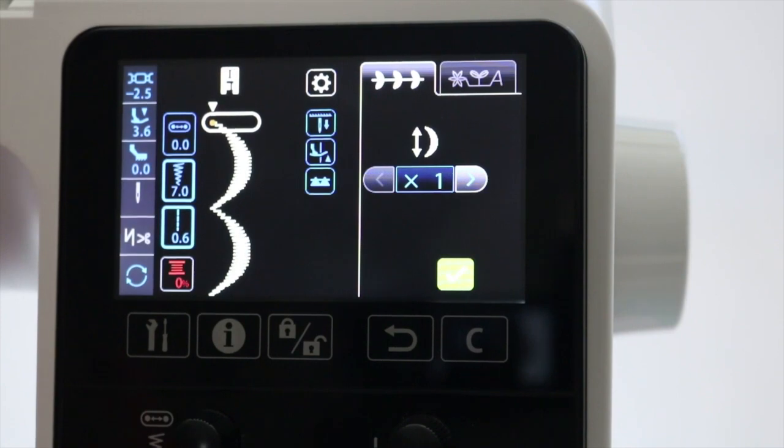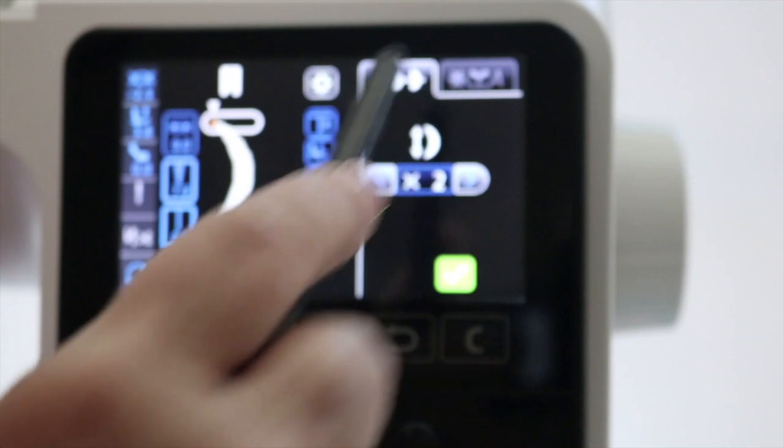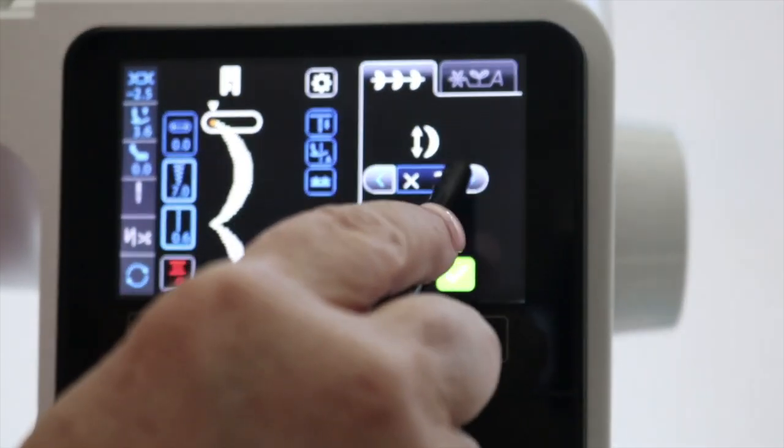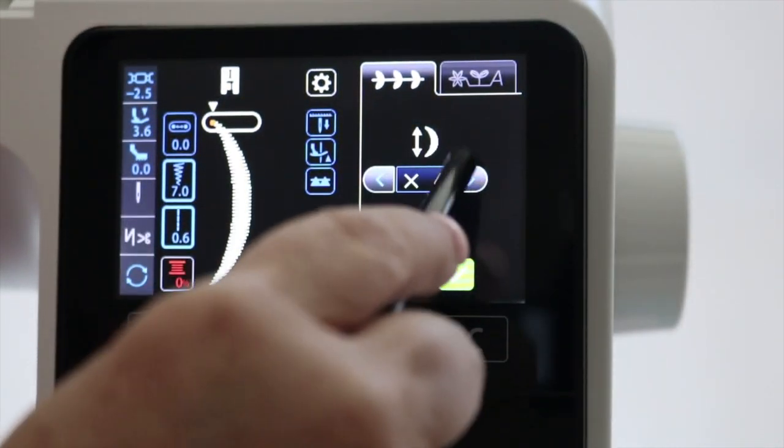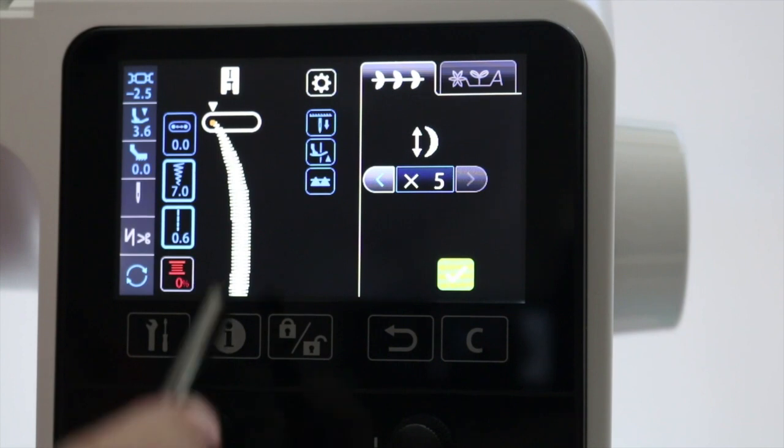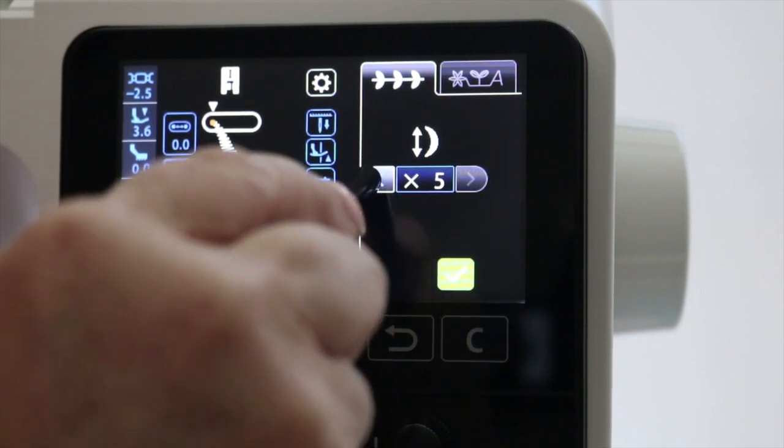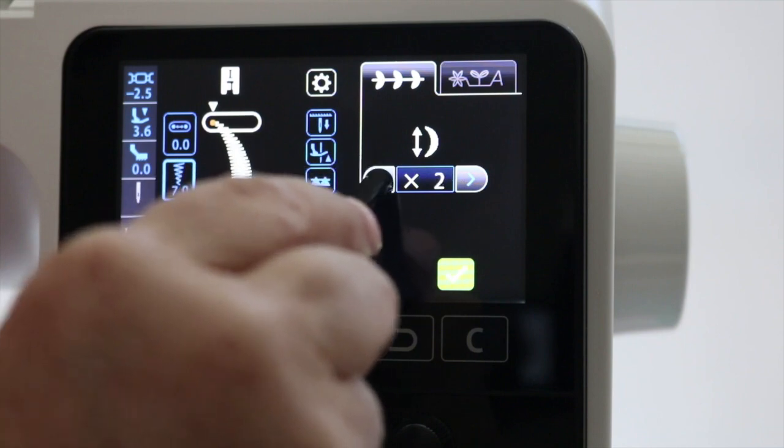Now we have a window that allows us to change this stitch two times its original size, three times, four times, and five times. You can see the changes taking place on the screen as you do that.